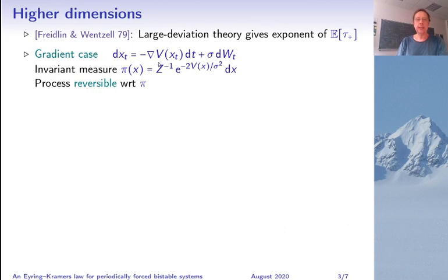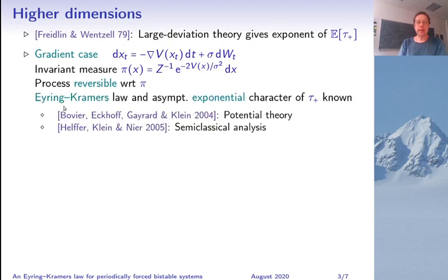Now in the gradient case, much more is known. In particular, the invariant measure is a Gibbs measure and the process is reversible with respect to this invariant measure. And Eyring-Kramers law for the expectation of τ₊ as well as the fact that τ₊ is asymptotically exponential are known for these gradient systems, and there are basically two approaches that have been developed, one based on potential theory and the other based on semi-classical analysis.